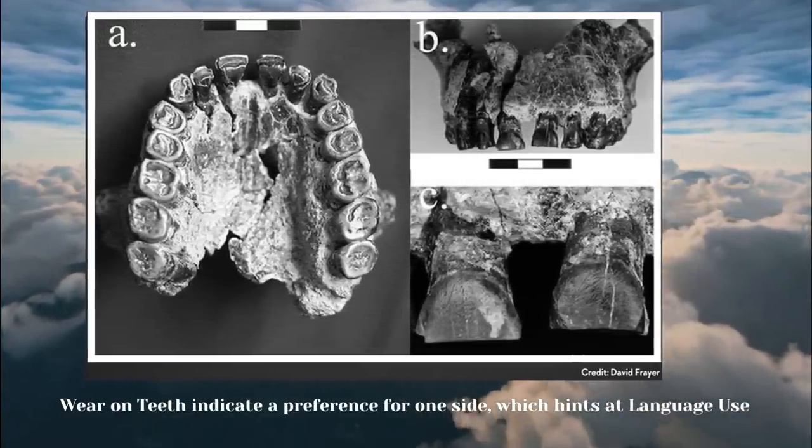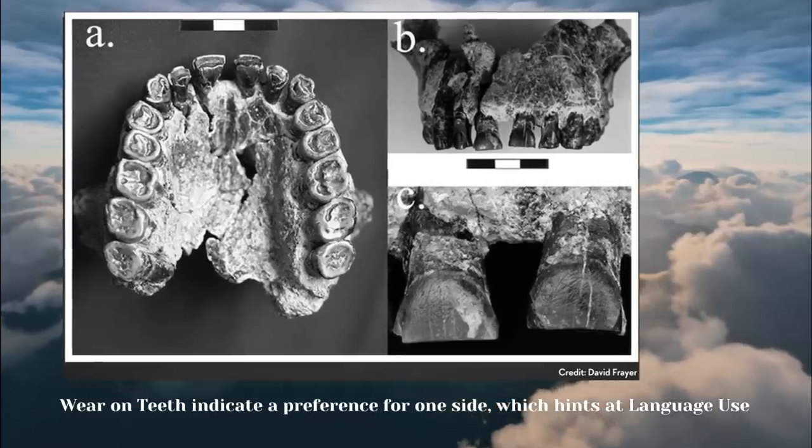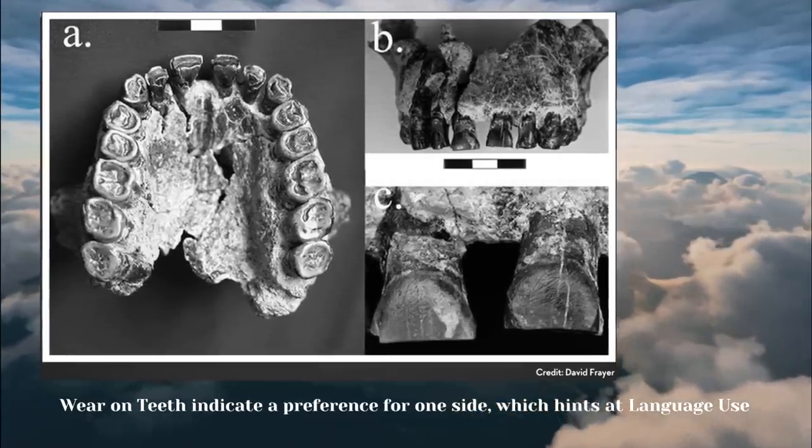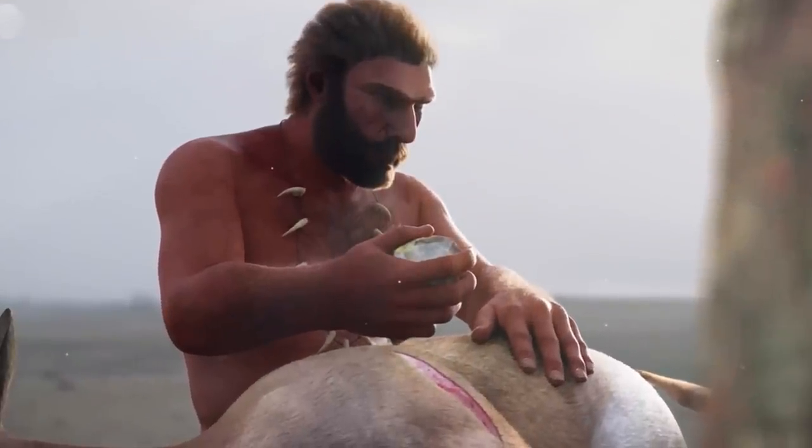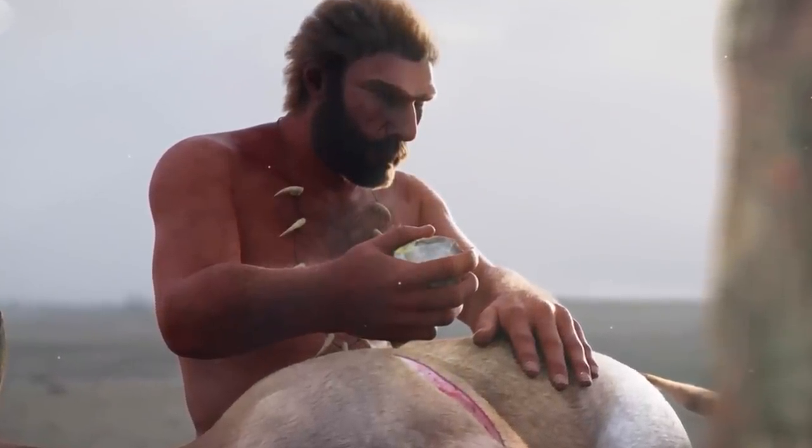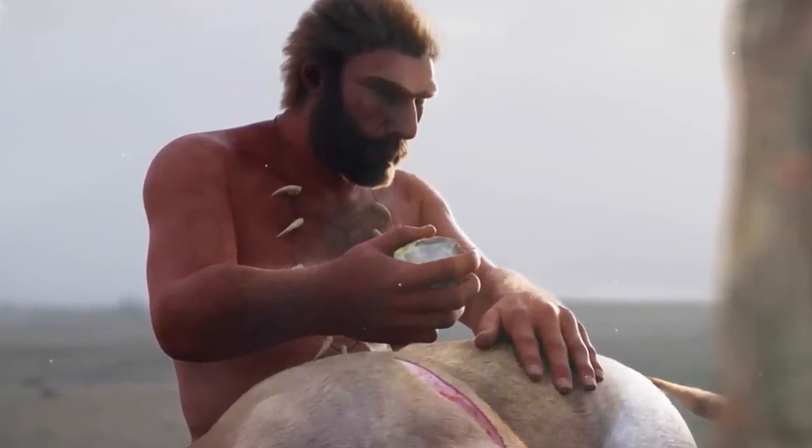Until this study, the earliest evidence of right-handedness appeared in Neanderthals and their earlier relatives from about 430,000 years ago. But how can researchers figure out from just bones if an individual was right- or left-hand dominant, or if they were handed at all?